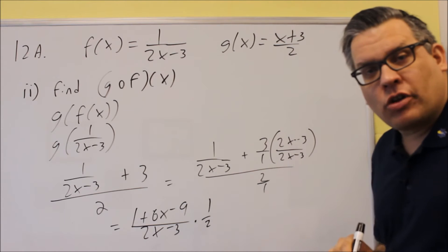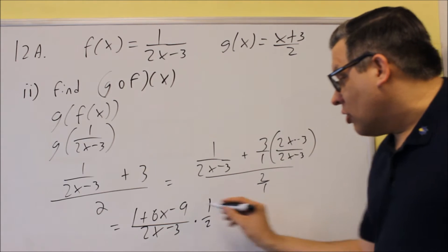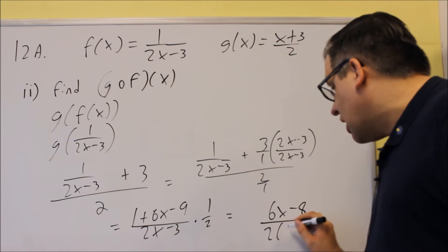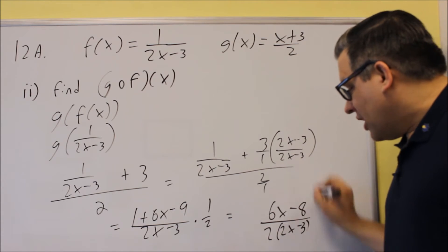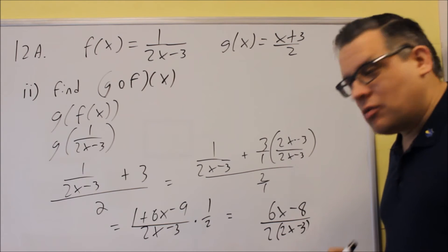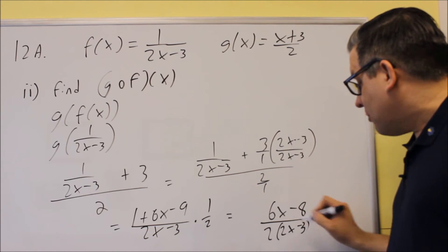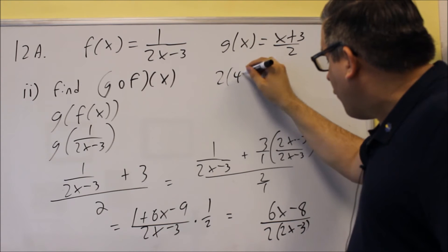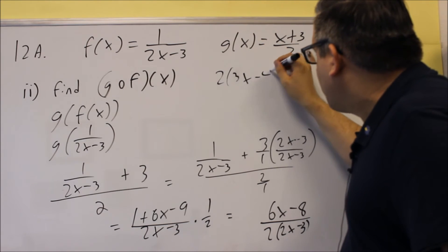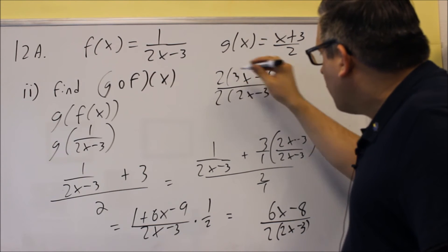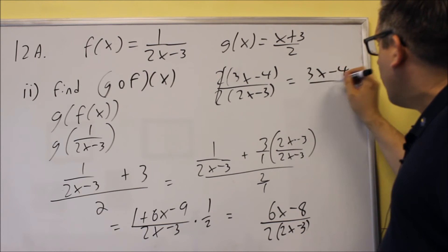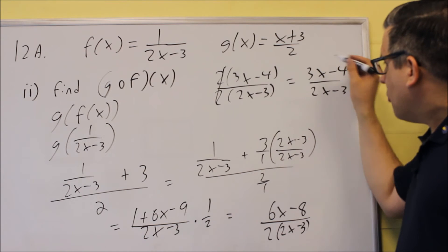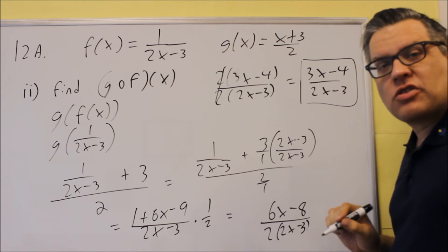By doing that, I got rid of the double fractions. Now we simplify: 6x minus 9 plus 1 gives 6x minus 8 on top, over 2 times 2x minus 3. It's okay to leave the answer in that form, but there's a little more we can do. Because there's a factor of 2 out front, we can factor a 2 from the numerator: 2 times 3x minus 4, and the 2s cancel. So the final reduced answer as a single fraction is 3x minus 4 over 2x minus 3.